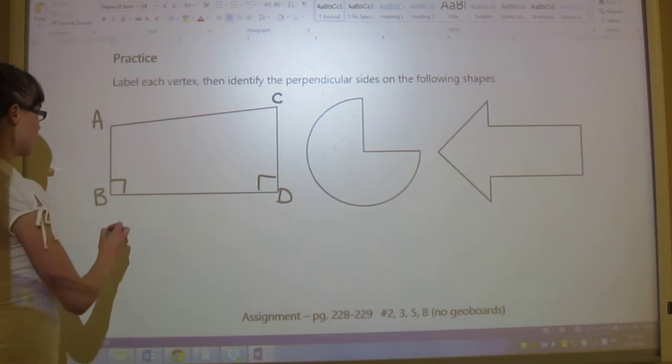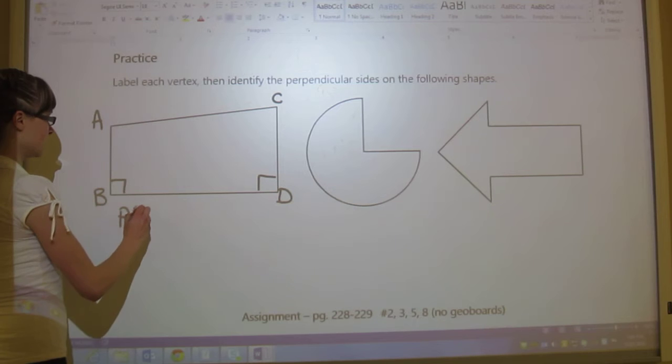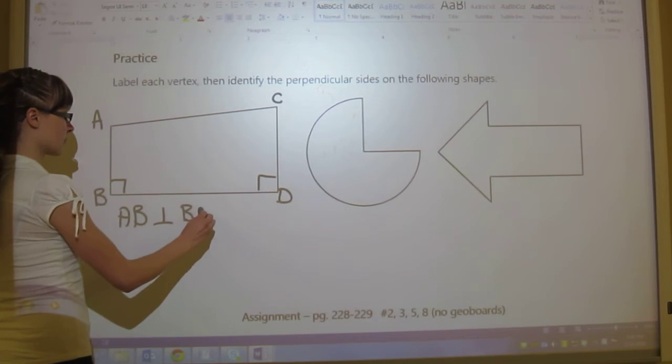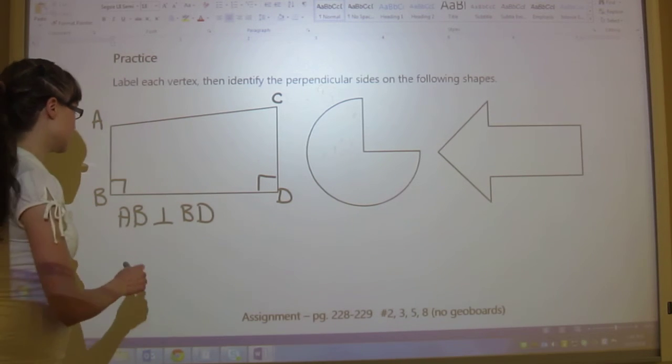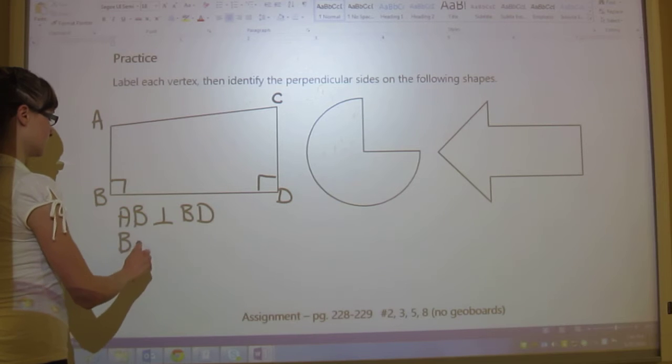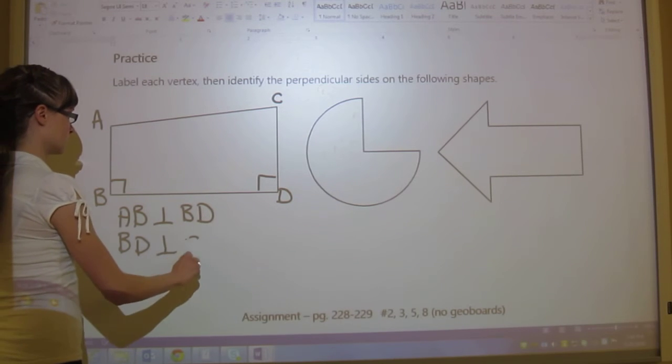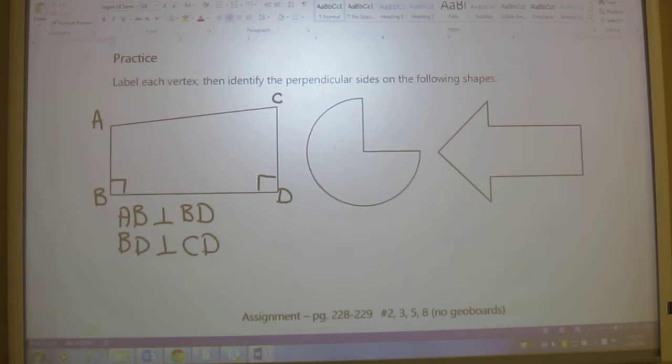And then I also need to write that AB is perpendicular to BD. And then I also need to write that BD is perpendicular to CD.